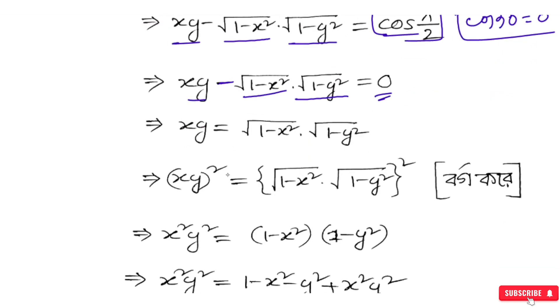So we get xy = √(1−x²)·√(1−y²). If we want to proceed, we take xy minus the root term, and it equals zero, which means xy is equal to √(1−x²) into √(1−y²).